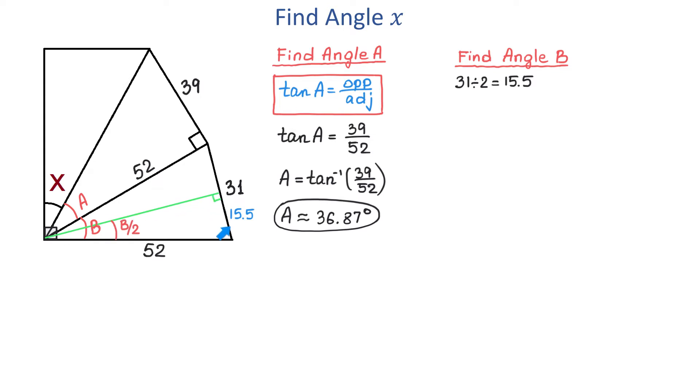In this right triangle we have angle B over 2 and we know that the opposite side is 15.5 and the hypotenuse is 52. To find this angle we need to use the sine function. Sine of an angle equals the opposite side divided by hypotenuse.